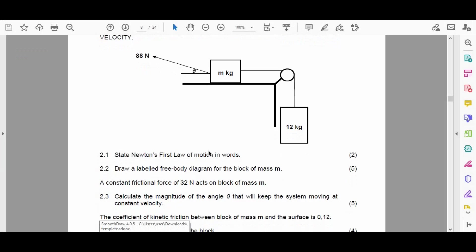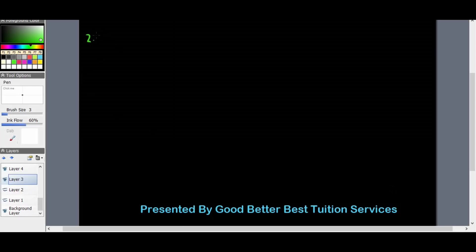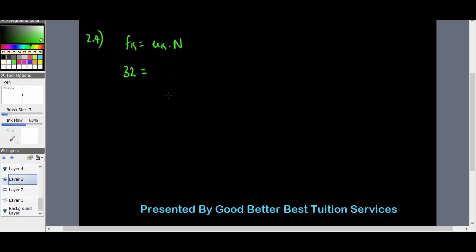2.4 says the coefficient of kinetic friction between block mass m and the surface is 0.12. Calculate mass m of the block. We use our kinetic friction formula: f_k equals mu_k times normal force. We have a value for kinetic friction, it is 32 for the unknown mass block. That equals 0.12 times the normal force. We divide both sides by 0.12, and we'll get the value of the normal force to equal 266.67 newtons.